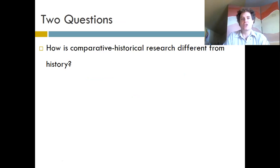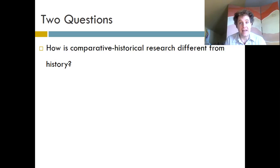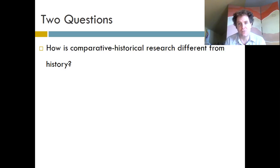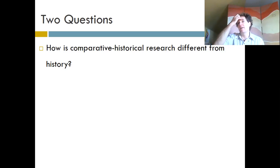Let's delve into what comparative historical research is a little bit more by asking two questions. The first question is: how is comparative historical research different from history? There is a whole field called history that examines the past. So what can comparative historical research in sociology do for us that history can't? How is this method different from just a regular history class? There are two main differences.